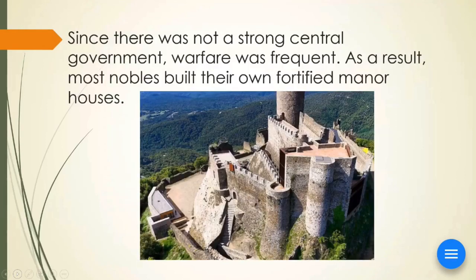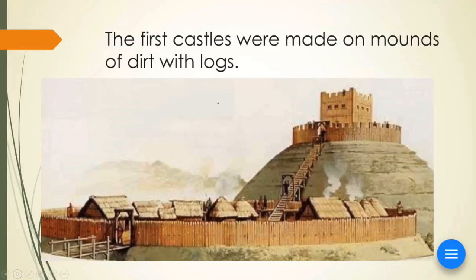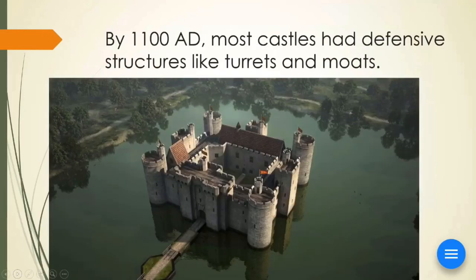Since there was not a strong central government, warfare was frequent and as a result, most nobles built their own fortified manor houses. The first castles were made on mounds of dirt with logs. But by 1100 AD, most castles had defensive structures like turrets and moats.